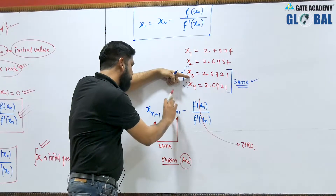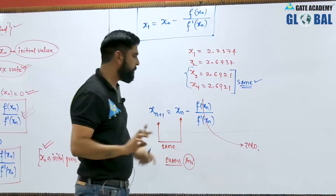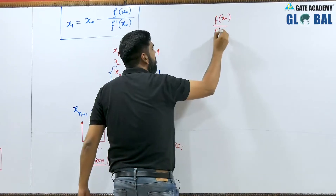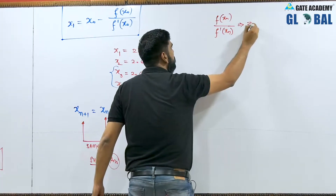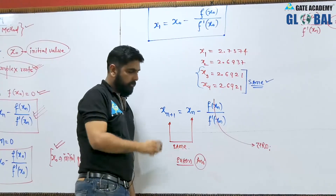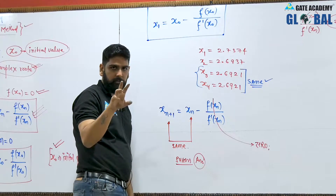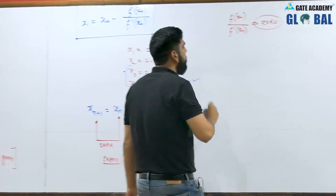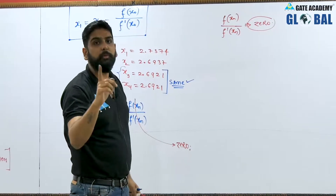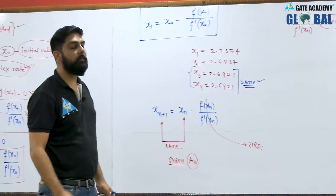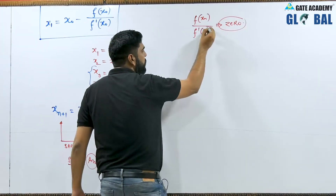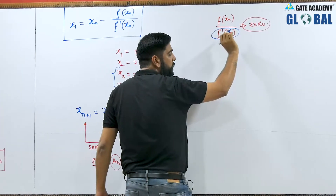When x_(n+1) equals x_n, the term f(x_n) / f'(x_n) must be zero. For this to be zero, the denominator f'(x_n) — which is the slope — should tend to infinity. If the slope is infinite, theta equals 90 degrees, meaning the tangent on the curve is nearly vertical.